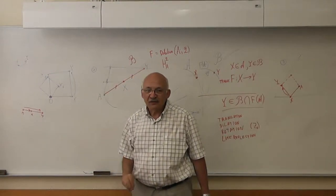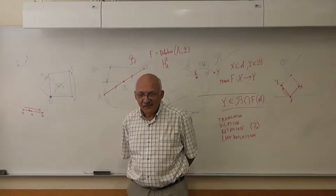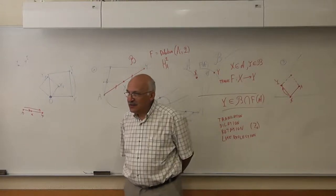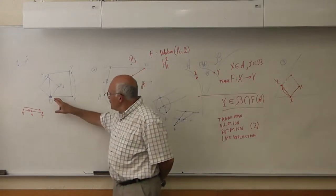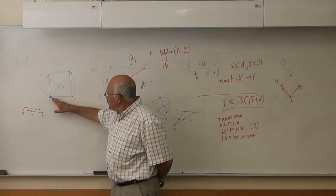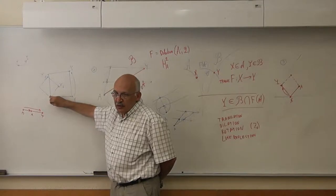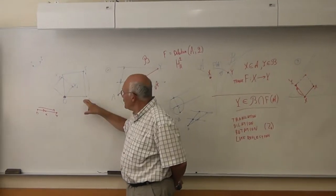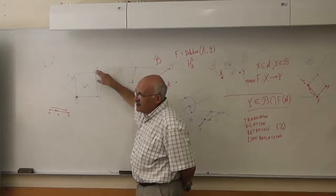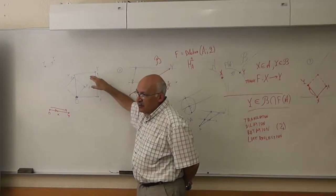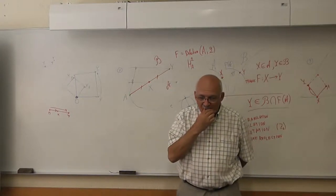We can do everything with point O. I want you to think of a transformation in which O is a fixed point, and any other point X goes into the next vertex of the square. We mean minus 90 degrees — so O and minus 90 degrees.